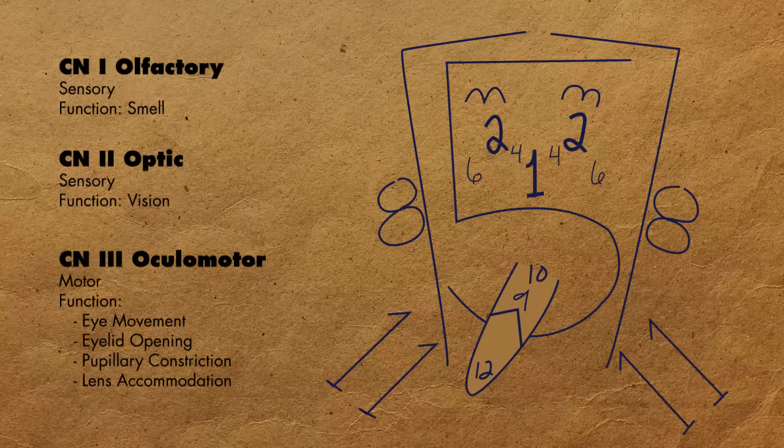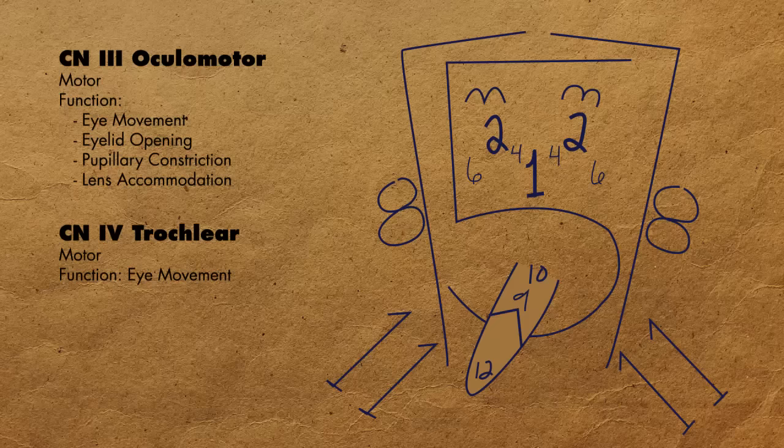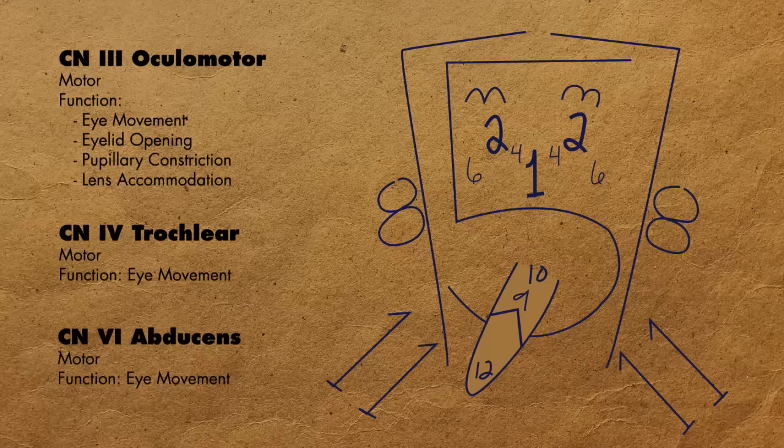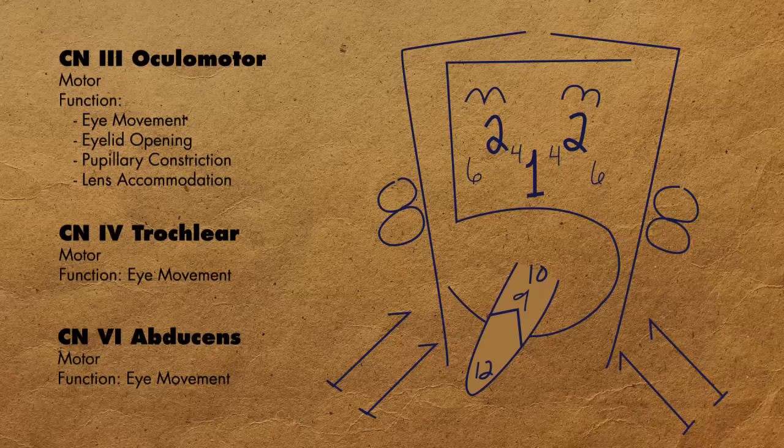Remember that I said that there were other cranial nerves responsible for eye movement? Well, let's talk about them now. These other nerves are cranial nerves 4, the trochlear nerve, and cranial nerve 6, abducens. Again, for simplicity's sake, just remember that these nerves are responsible for eye movement. And in summary, they are cranial nerves 3, the oculomotor nerve, cranial nerve 4, the trochlear nerve, and cranial nerve 6, abducens.